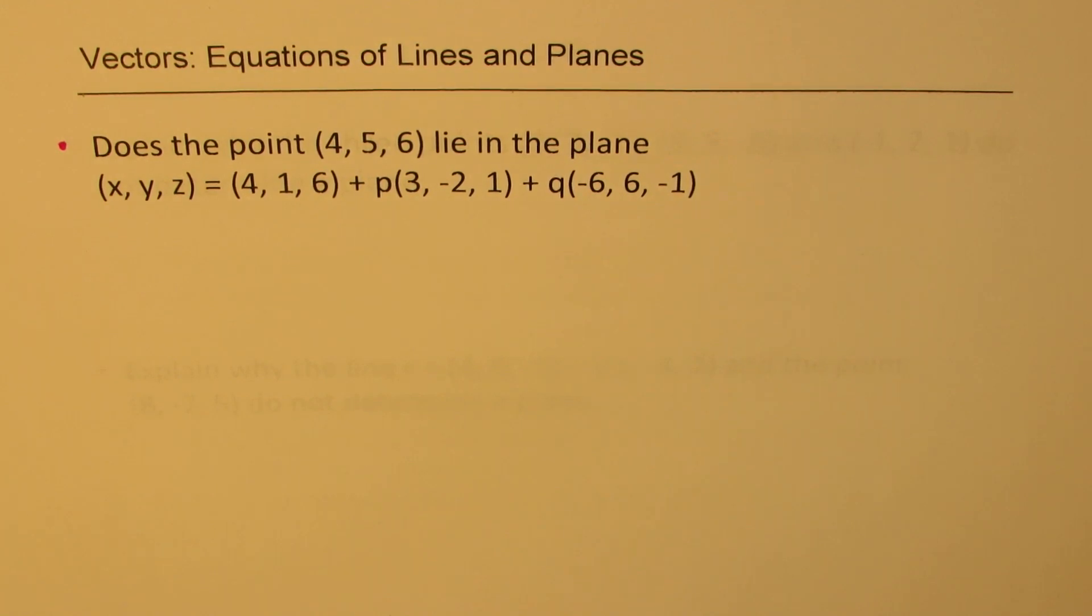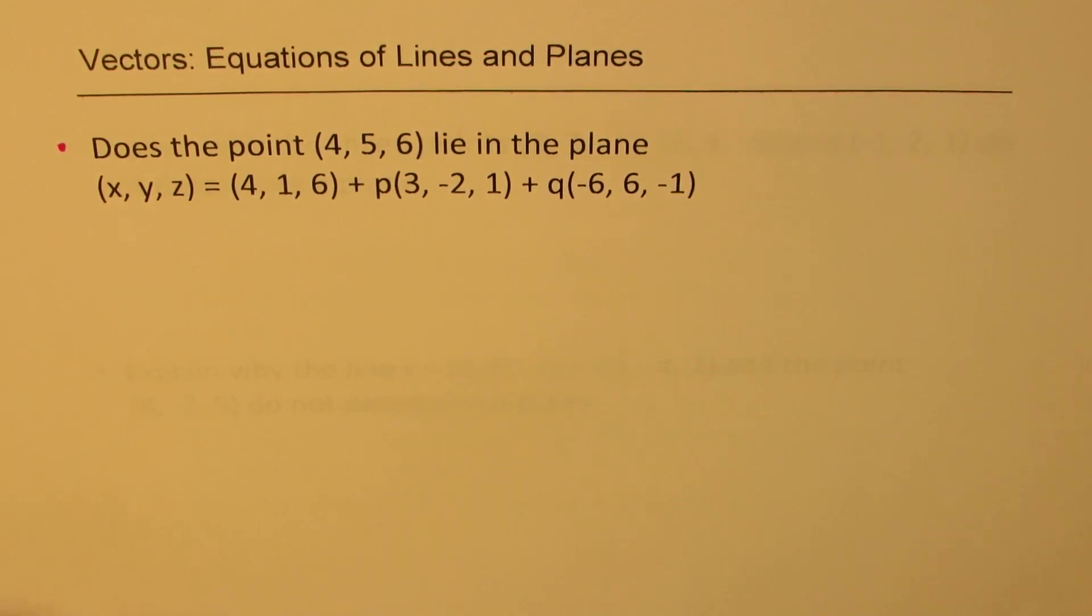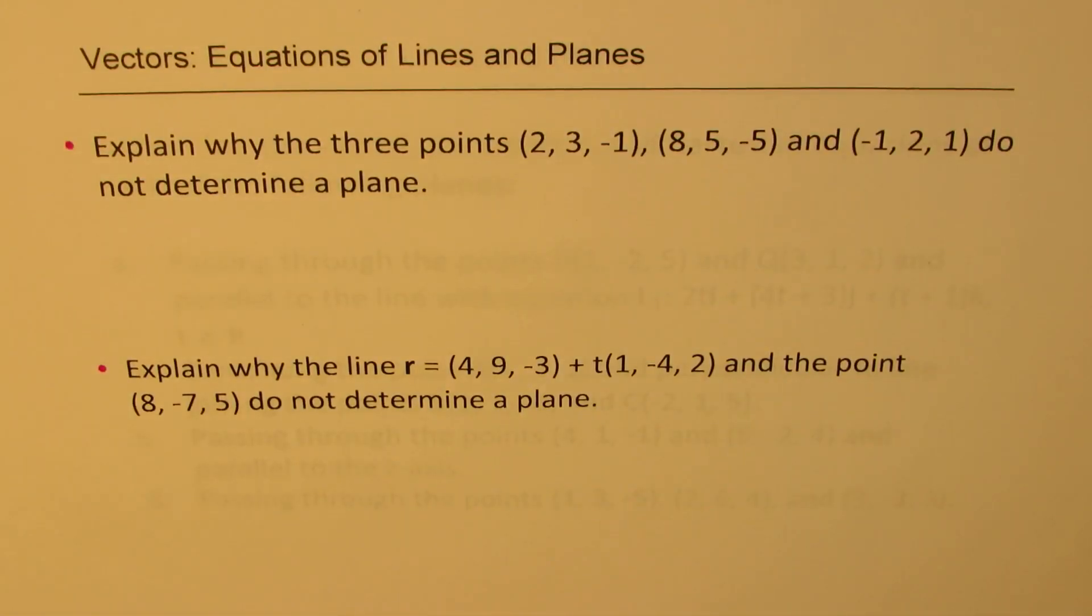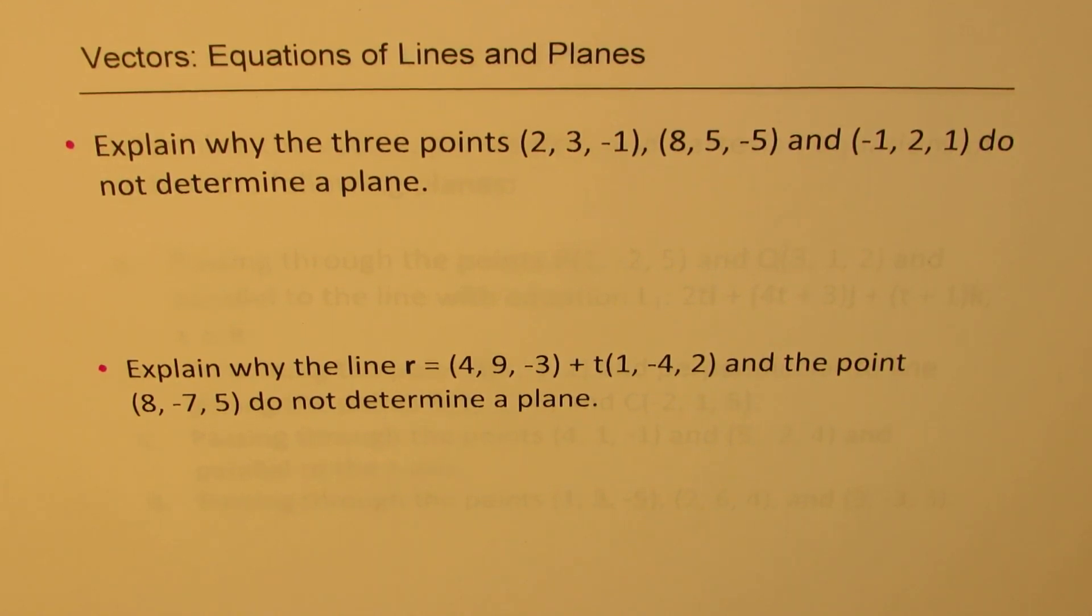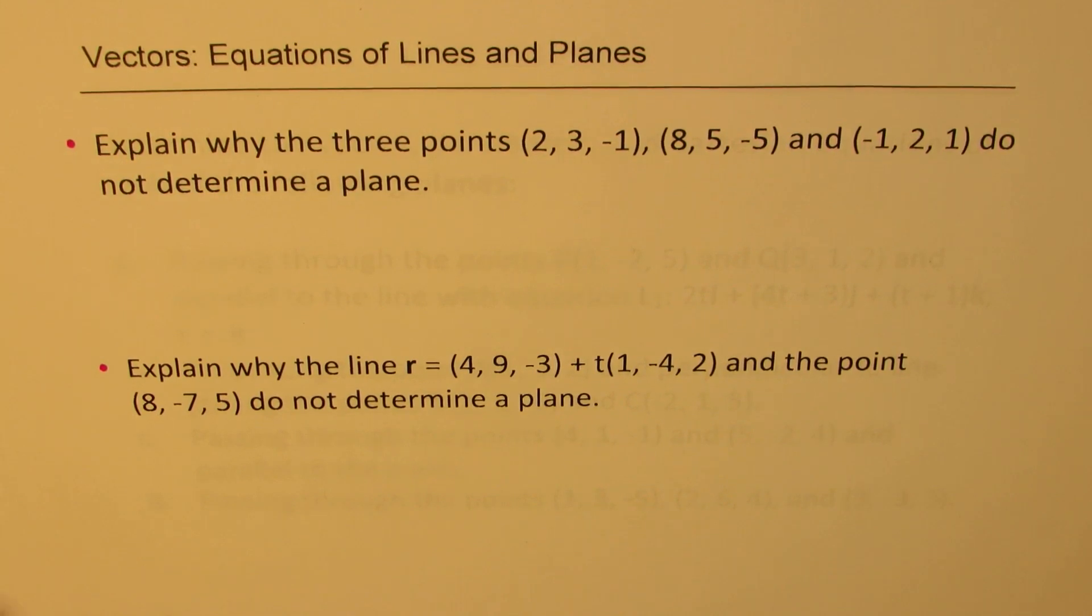Let us look into these questions and we'll take them one by one. The very first one here is, does the point (4, 5, 6) lie in the plane? So we are given an equation of the plane. We need to verify if that point lies on the plane or not. Second question here is about explaining why the three points do not determine a plane. Explain why the line and the point do not determine a plane.